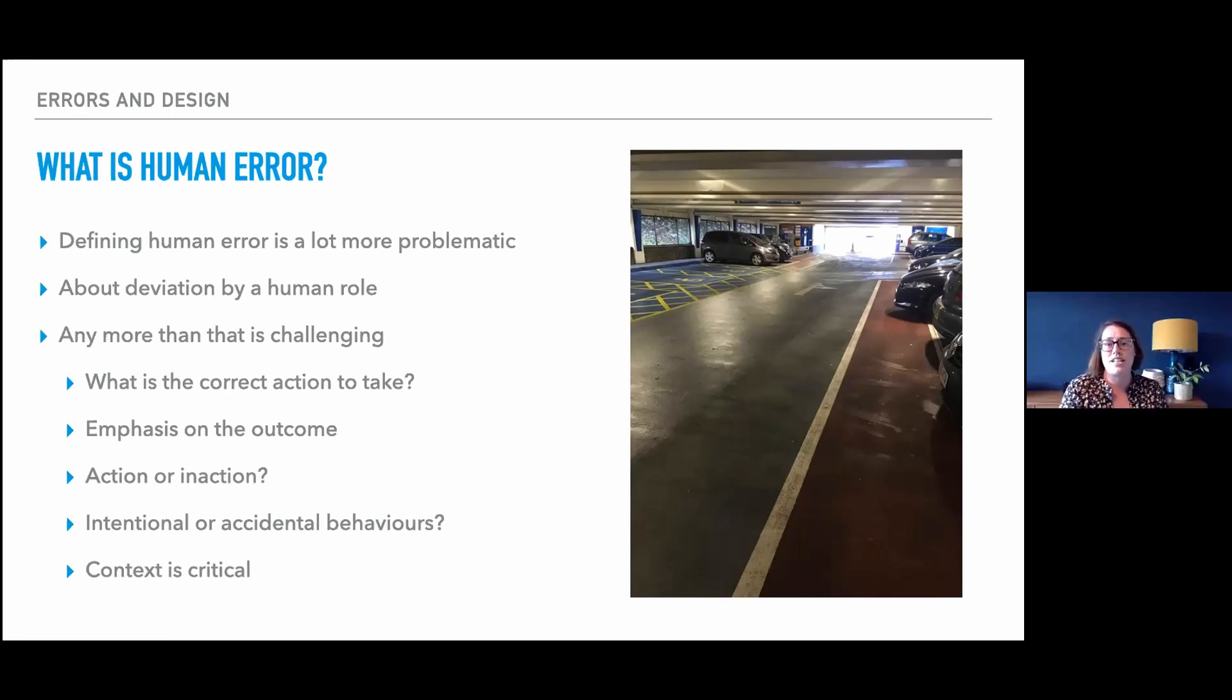But actually, an error can encompass both of those things. They could be something we intended to do. They could be something we completely did by accident, as can correct actions. So how do things really differ between something that's an error and something that's not? The main point that really underlies all of that is that the context is absolutely critical. It's the situation in which that action or that inaction takes place that is fundamental to defining what the correct action was to take, whether the outcome was positive or negative, whether it was an action, an inaction, whether it was intentional or accidental. And when we've got something that's so context dependent, it can be very hard to put a definition on it.